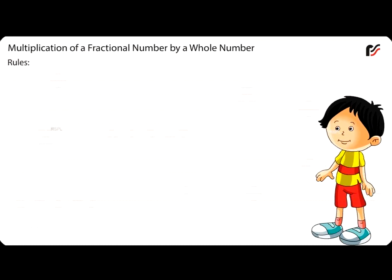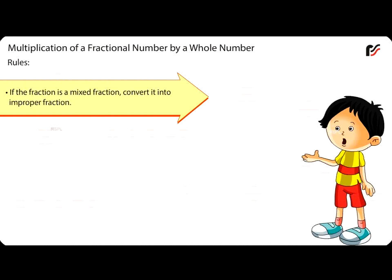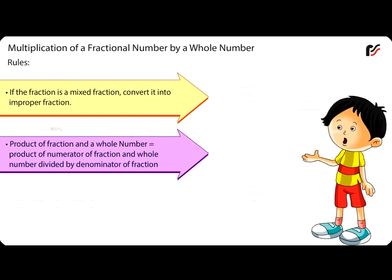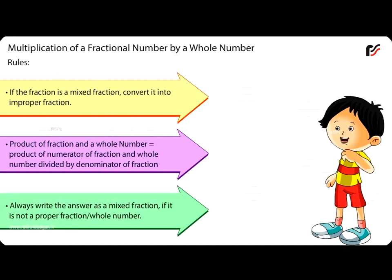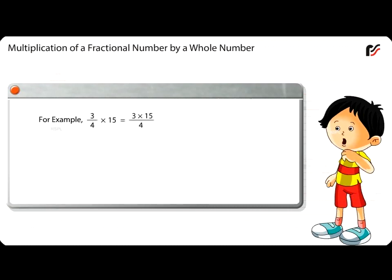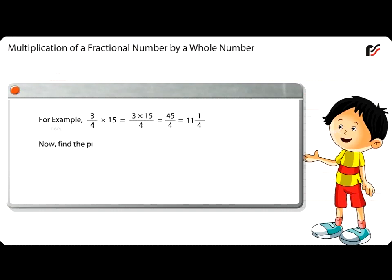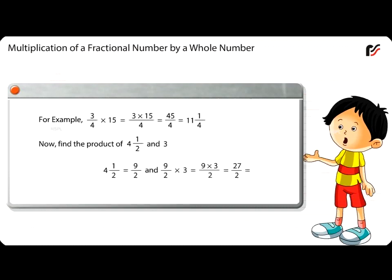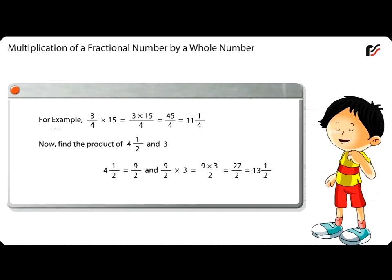Multiplication of fractions. Multiplication of a fractional number by a whole number — rules: if the fraction is a mixed fraction, convert it into an improper fraction. The product of a fraction and a whole number equals the product of the numerator and whole number divided by the denominator. Always write the answer as a mixed fraction if it is not a proper fraction or whole number. For example, 3 by 4 multiplied by 15 equals 45 by 4, which equals 11 and 1 by 4. Also, 4 and 1 by 2 equals 9 by 2, and 9 by 2 multiplied by 3 equals 27 by 2, which equals 13 and 1 by 2.